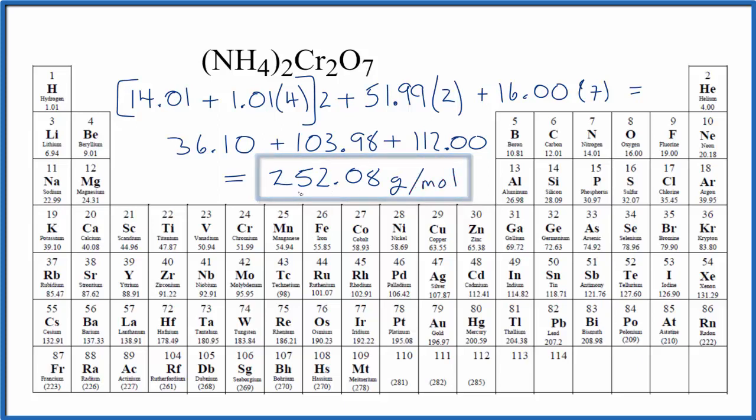So if we had 252.08 grams of ammonium dichromate, that would be one mole of ammonium dichromate. If we were told we had one mole of our ammonium dichromate, we'd know the mass is 252.08.